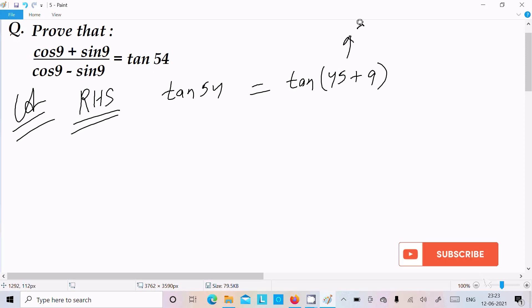Now it's the same as the tan(A plus B) form, so let's break that tan(A plus B). So we can write tan45 plus tan9 divided by 1 minus tan45 into tan9. The value of tan45 is equal to 1.